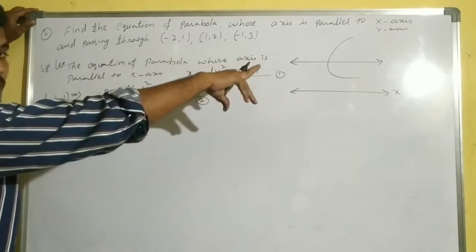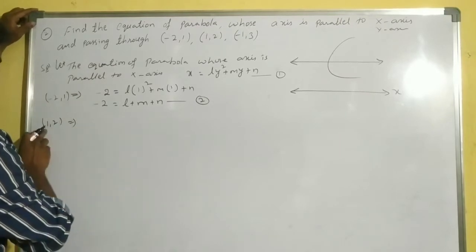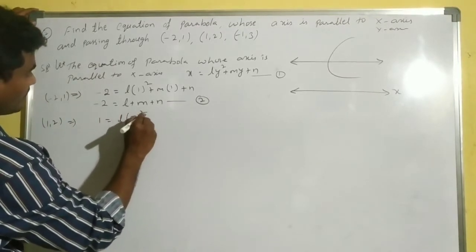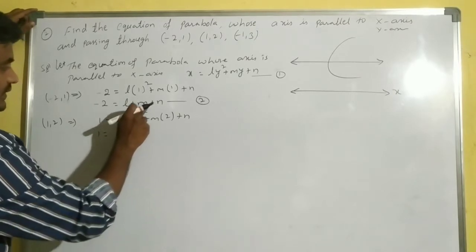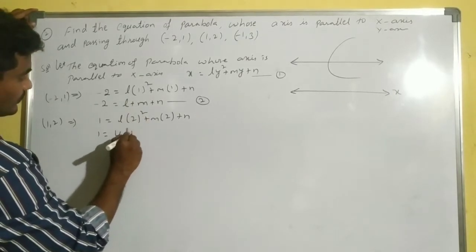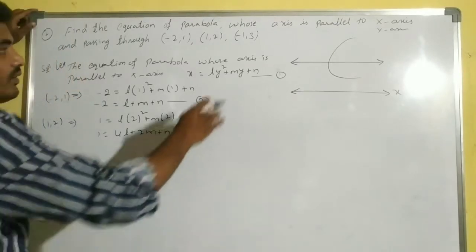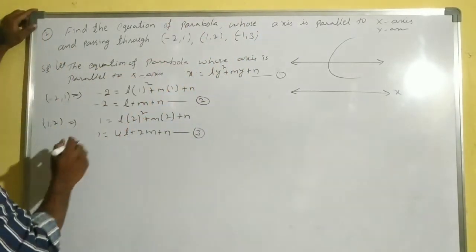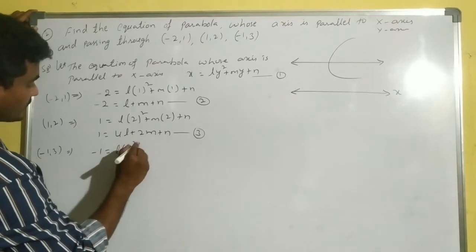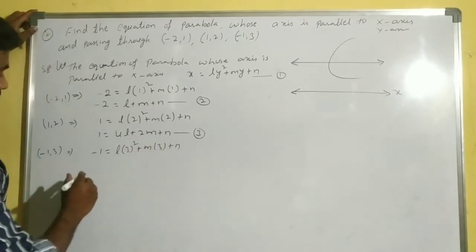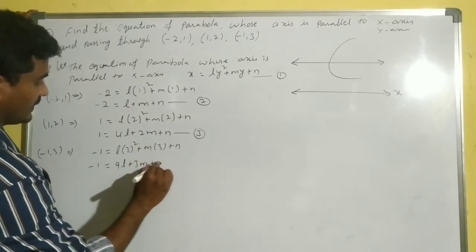Since (1, 2) is also on the parabola, x = 1 and y = 2: 1 = l(2)² + m(2) + n, giving 1 = 4l + 2m + n. This is equation number 3. Since (-1, 3) is also on the parabola: -1 = l(3)² + m(3) + n, giving -1 = 9l + 3m + n. This is equation number 4.